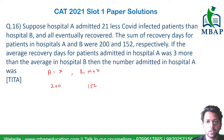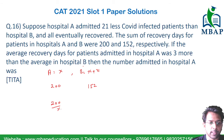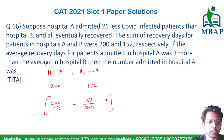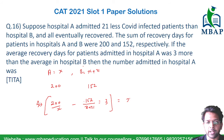To find the average recovery days per patient: for hospital A it will be 200 upon X, and for hospital B it will be 152 upon X plus 21. The difference of them will be 3. So the equation is: 200 upon X minus 152 upon (X plus 21) equals 3.